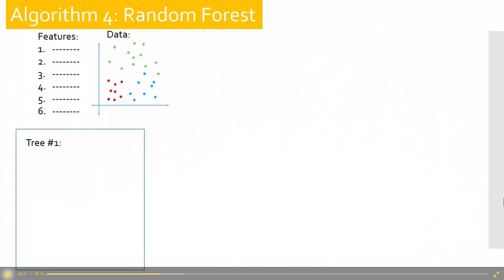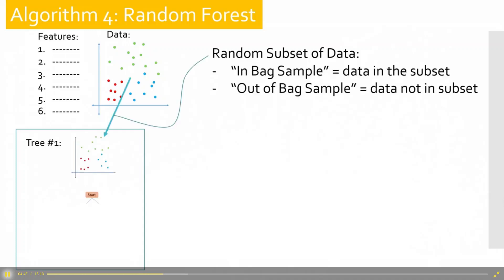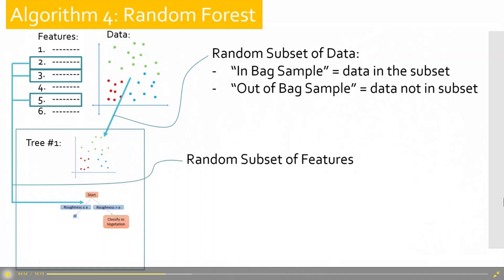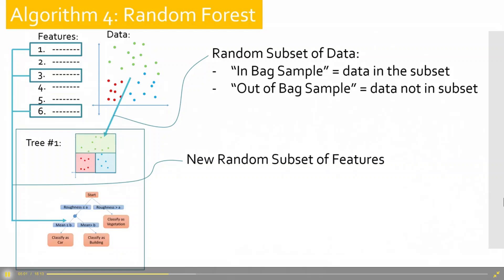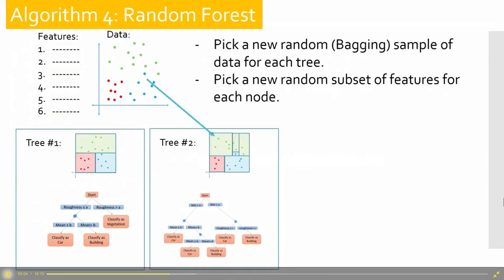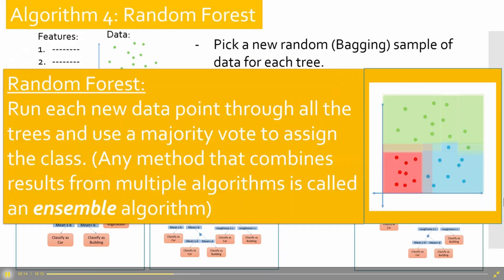So what we're going to do is a random forest. For a random forest, we take a random subset of our data — the in-bag sample — and what's left is the out-of-bag sample. Then we take a random bunch of features and make a tree, just like before. Because we make more trees and they're random, they're all going to be a bit different, with slightly different splits and features. You do this many times to get a forest of different trees. You run your data through all of them, and whatever class your data gets most often is how you classify it.